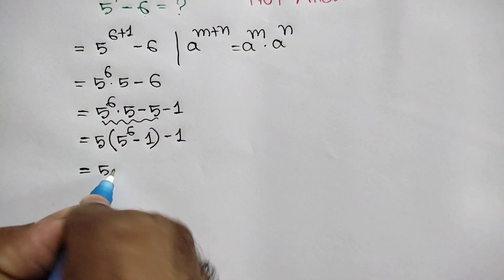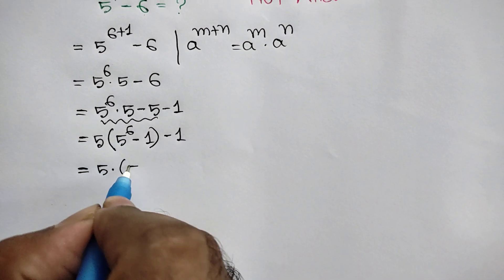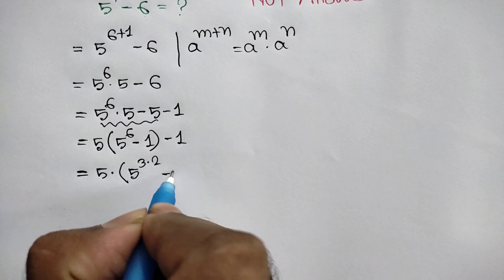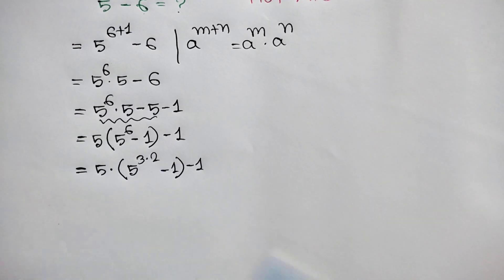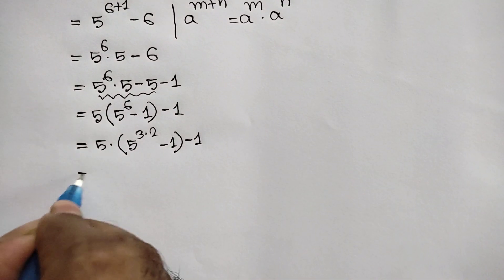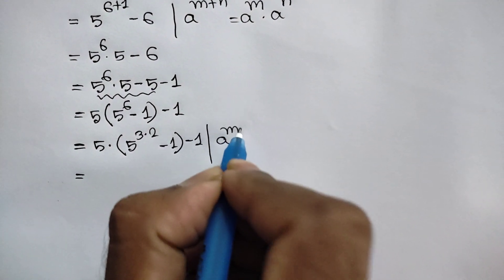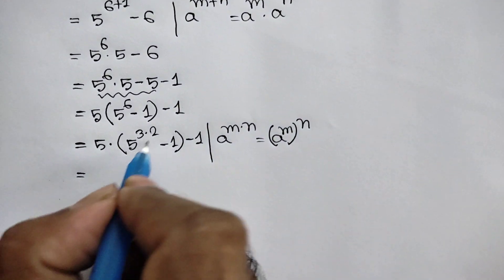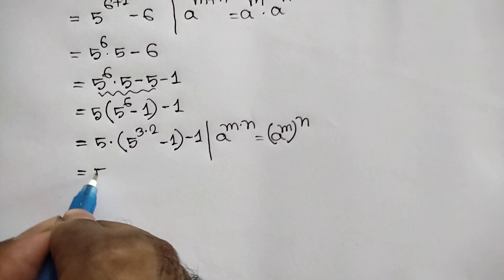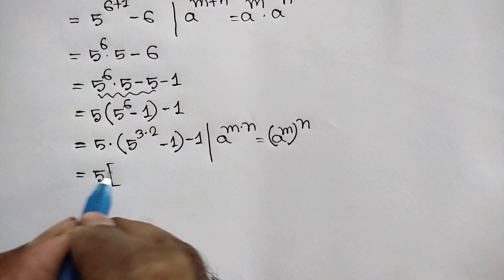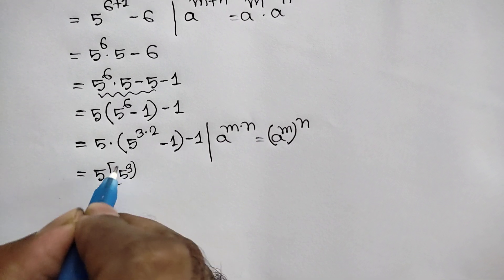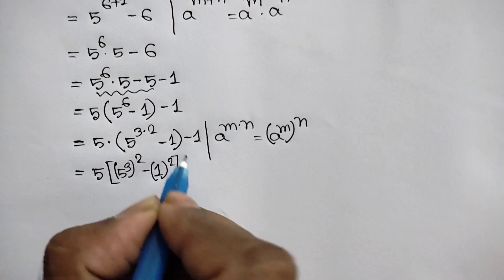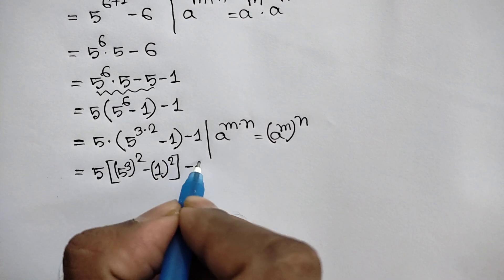5 times 5 to the power 6 can be written as 5 to the power 3 times 2, minus 1, and this negative 1. We know that a to the power m times n is equal to a to the power m whole to the power n. Applying this rule, we can write 5 times 5 to the power 3 whole squared, minus 1, and this negative 1.